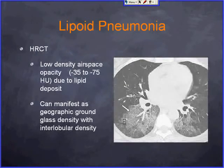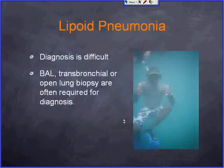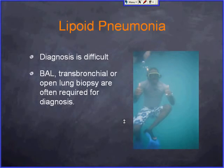On high-resolution CT, the key clue is low-density airspace opacity in the range of minus 35 to minus 75 Hounsfield units due to lipid content. True diagnosis can be difficult and requires a combination of respirology and biopsy pathology.